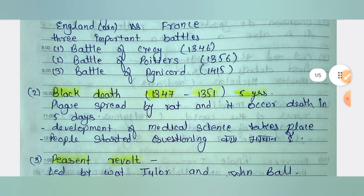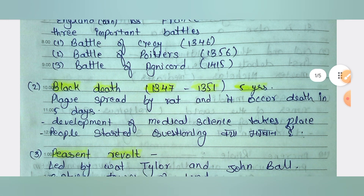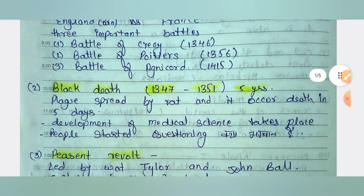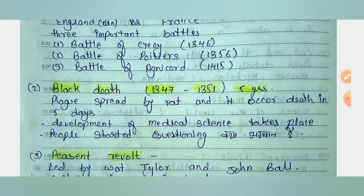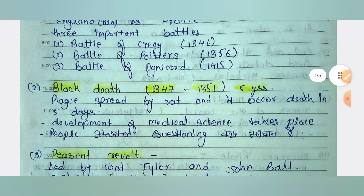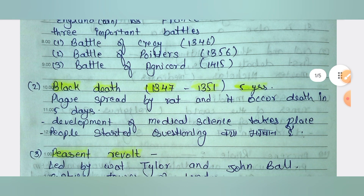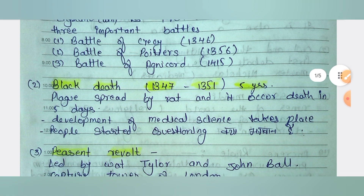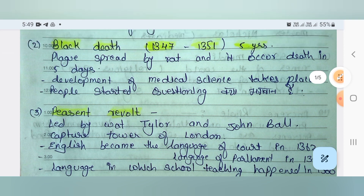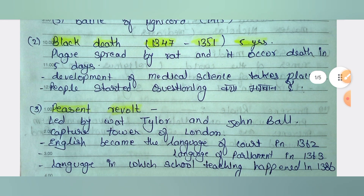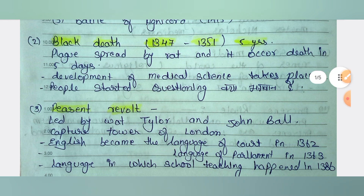This is so sad — one-third of the population died. People started questioning due to the plague, and it also led to the development of medical sciences. The next major event is the Peasant Revolt, led by Wat Tyler and John Ball. The peasants captured the Tower of London.